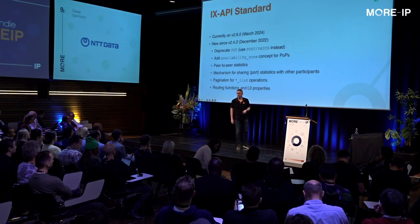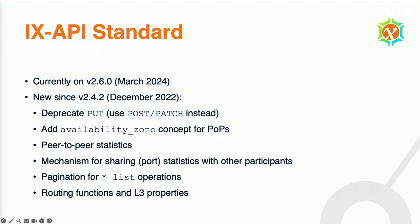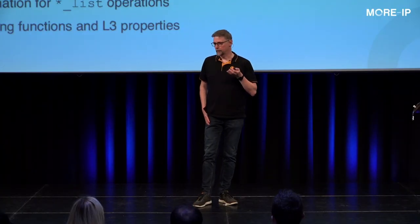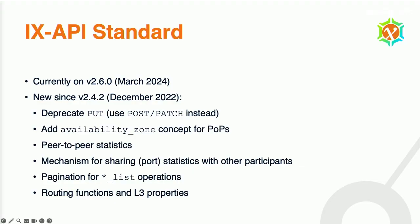It's now really more of an almost maintenance mode where we do small tweaks to the standard. We're currently on version 2.6. Compared with last year, we started making small fixes to make it more sustainable. There's been tweaks to allow for more flexible cloud connectivity. One of the big things added is routing functions and layer 3 properties, which is something I would never have thought to put in an IX API, which is typically layer 2. But the idea of cloud routers and layer 3 functionality is a real use case, so we built that in as well.